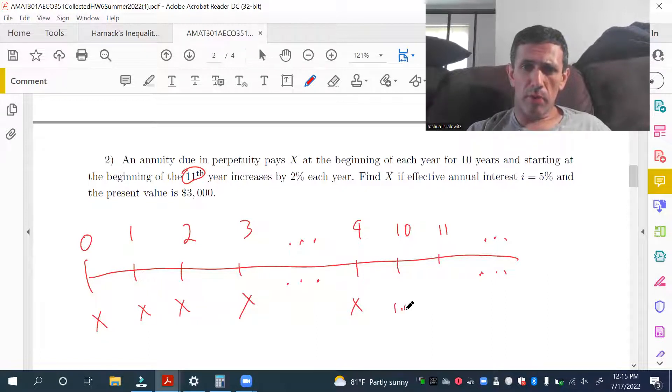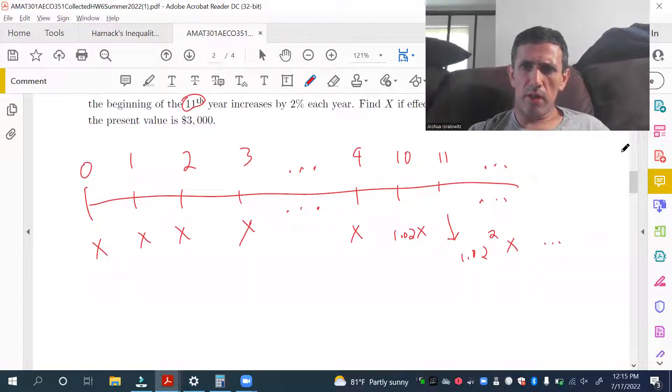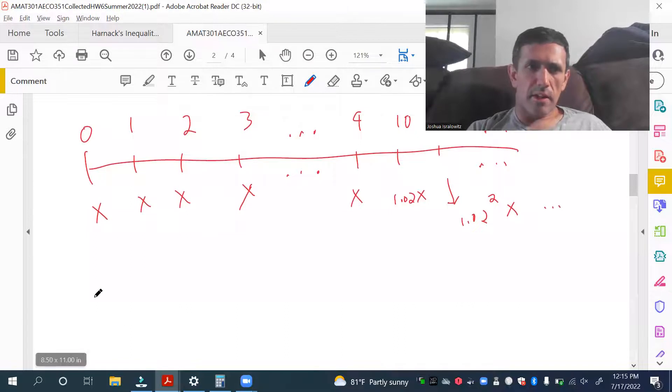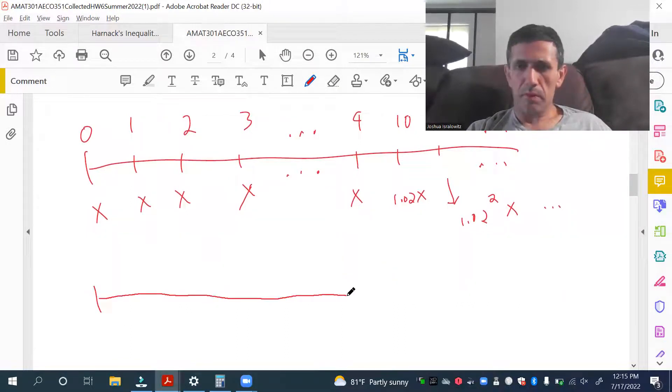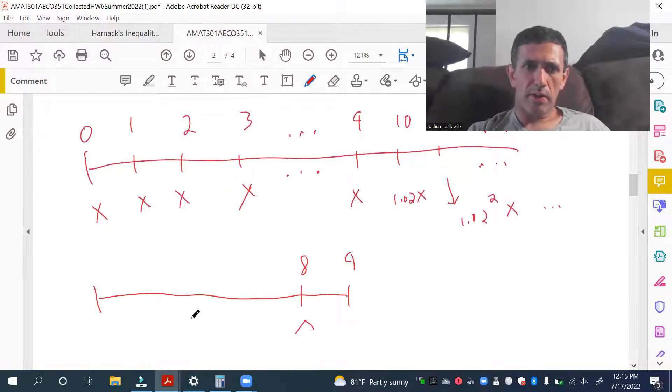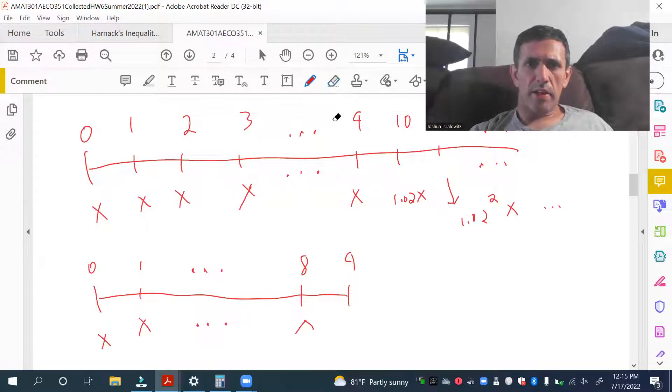So, this is 1.02 X. Can't squeeze it in. 1.02 squared X. Et cetera. So, we break this up into two annuities. I'll draw a time diagram for these two. So, let's take the first annuity due. That is a nine-year annuity. That should be an X. So, payments are at the beginning of each year. And the last year in this annuity is the ninth year, which is T equals 8, T equals 9.